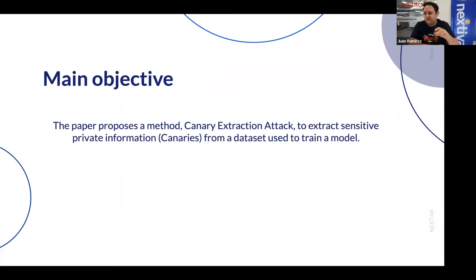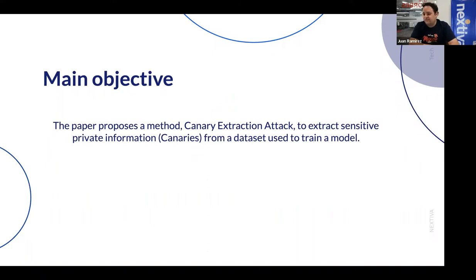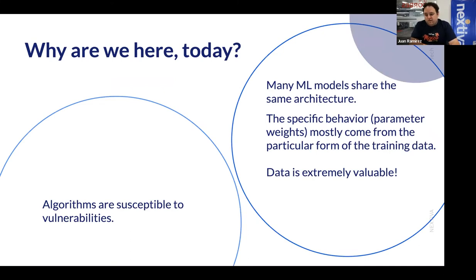This paper proposes a method — the canary extraction attack — whose purpose is to extract sensitive private information, which we're going to be calling canaries, since we're inserting them into the training set as a way to diagnose the problem. The idea is to extract sensitive private information from a dataset used to train a model. More generally, the moral here is that algorithms are susceptible to vulnerabilities, and just like with classical algorithms, we need to think of these things in machine learning.